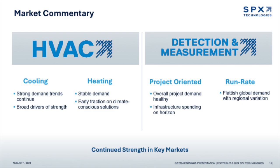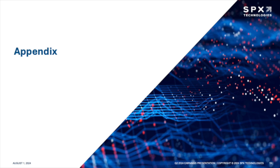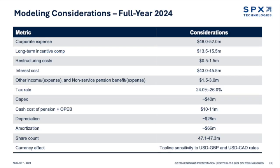On the operational front, we are executing well on cross-selling opportunities, allowing our recent acquisitions to leverage our well-established sales channels to expand their market reach. We are further broadening our exposure to robust growth markets, such as data centers and healthcare. We also continue to see momentum in our continuous improvement initiatives, including further gains in throughput in our HVAC facilities. I'll turn the call over to Mark to review our financial results. Q2 was another very strong quarter for SPX Technologies. Year-on-year, our adjusted EPS grew 34% to $1.42.